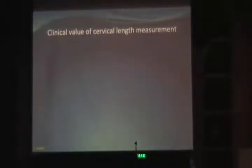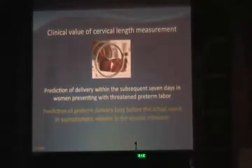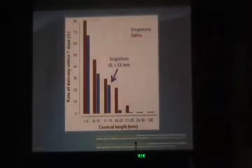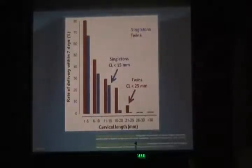What is the clinical value of cervical length measurement in pregnancy? It is clinically useful in predicting the likelihood of delivery within the following seven days in patients presenting with painful contractions and threatened preterm labor, and in the remote prediction of preterm delivery in asymptomatic mid-trimester pregnant women long before the actual event. In patients presenting with painful contractions, cervical length measurement is essential because the risk of spontaneous preterm delivery within seven days is inversely related to cervical length, increasing exponentially when cervical length is less than 50 mm in singletons and less than 25 mm in twins. This allows you to distinguish between women in false preterm labor and women in true preterm labor, who need to be hospitalized and given tocolysis and steroids.